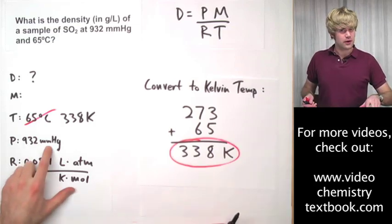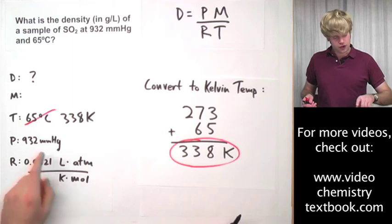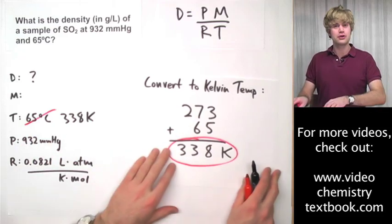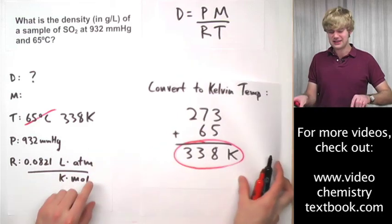Let's take a look at pressure. Here, the units of pressure don't match my pressure units on R. That's a problem. I have millimeters of mercury here and I have ATMs there.